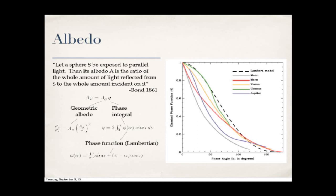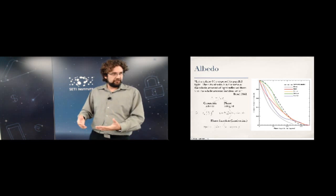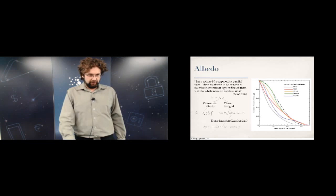An interesting historical note: when the bond albedo was defined, emission from planets wasn't considered because Jupiter and our solar system planets are so far from the sun that the blackbody emission peak is far outside the optical. But with the discovery of hot Jupiters that are very close in, the geometric albedo interpretation becomes more complicated.